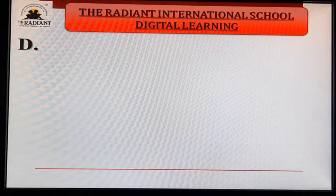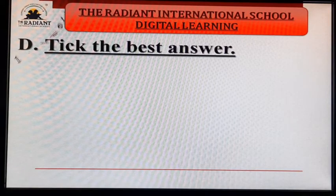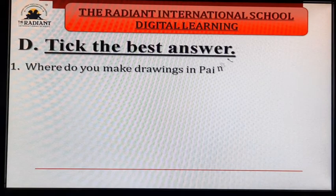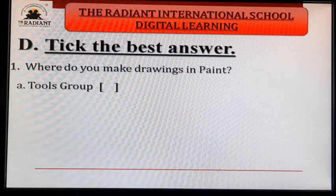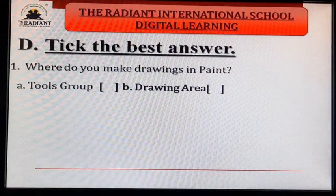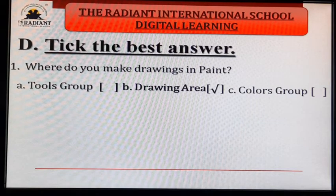Exercise D — take the best answer. First: where do you make drawings in paint? Options: A. tools group, B. drawing area, C. color groups. Answer is B — drawing area.